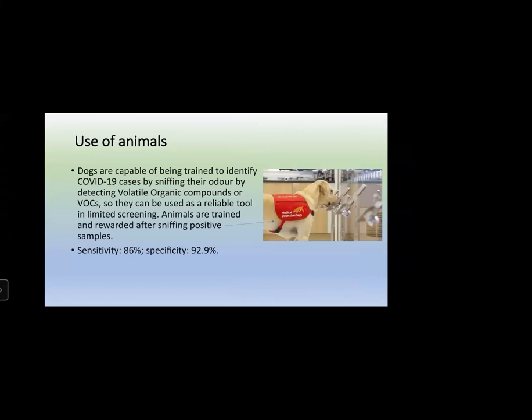Science is not limited to molecular tests or lab tests. Animals like sniffer dogs can also be used — they are capable of detecting tuberculosis and other diseases, and can be trained to identify COVID-19 cases by sniffing their odor. Given a nasopharyngeal aspirate swab sample, dogs detect particular volatile organic compounds (VOCs) that differ from those in healthy individuals, making them a reliable tool for limited screening.